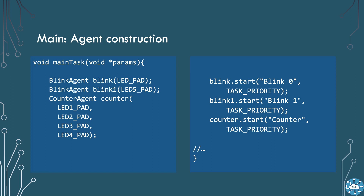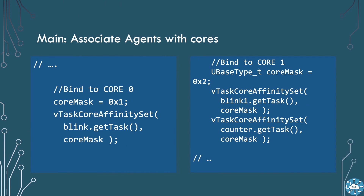All the SMP work is in our main task. We'll set up the agents and start them. We'll create a core mask for core zero only, meaning setting the first bit of the byte — so a value of one. This core mask is used as the affinity set for our first blink task. We'll then create a core mask for core one only, i.e. a mask where the second bit of the byte is set, or a value of two. We apply this affinity set to blink one and counter agent.